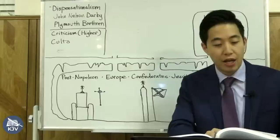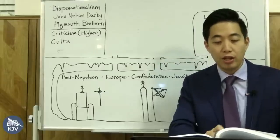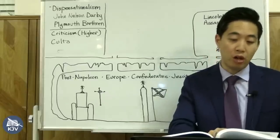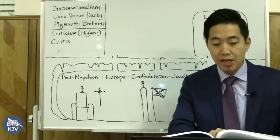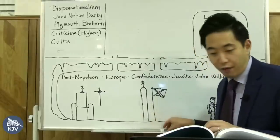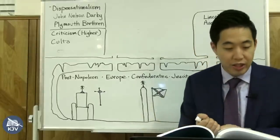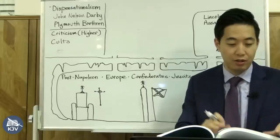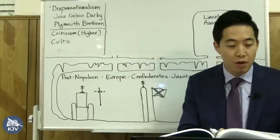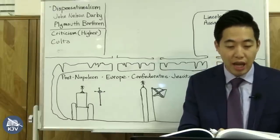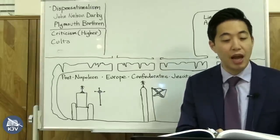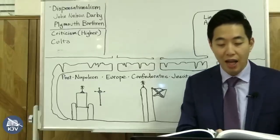Pope Pius IX established the Catholic dogma of the Immaculate Conception of Mary — that she was free from the stain of original sin and was sinless like the Lord Jesus Christ. Obviously, that's wrong. This heresy was added to the dogma of papal infallibility he established, which formally stated that the pope was incapable of error. In the political realm, he fought against anti-Catholic laws in many heavily Catholic countries.